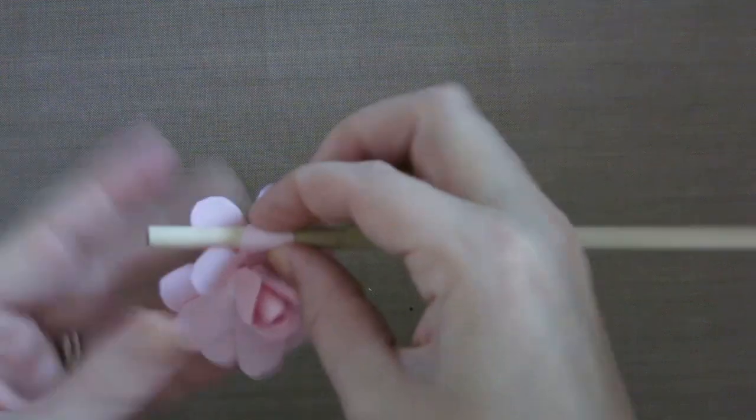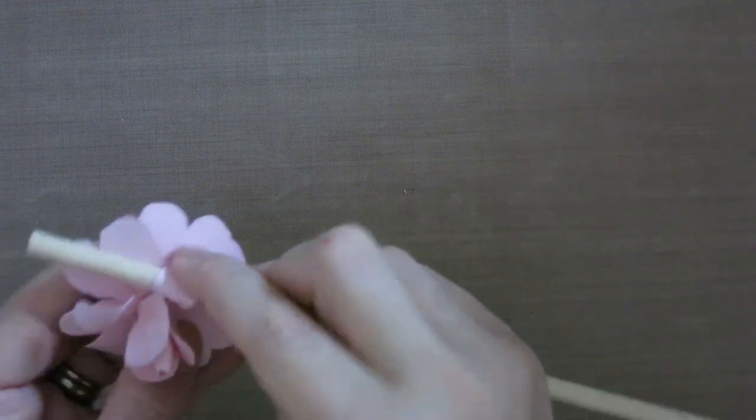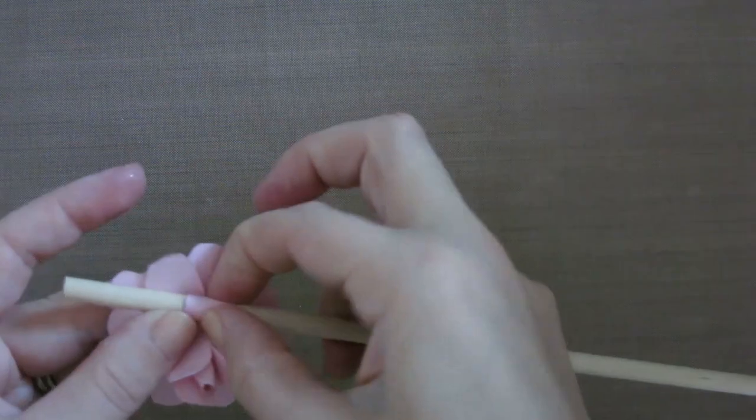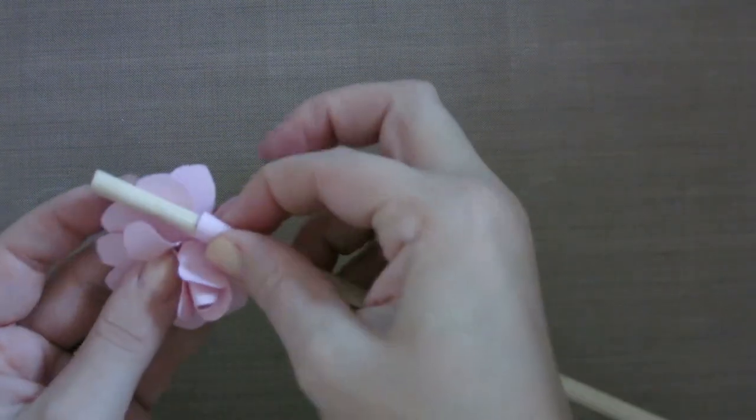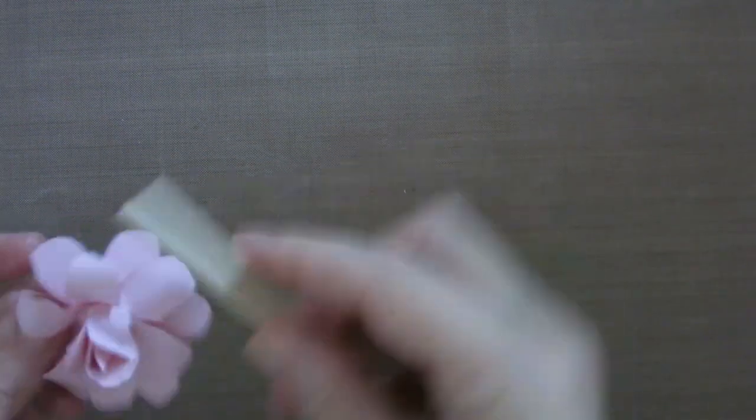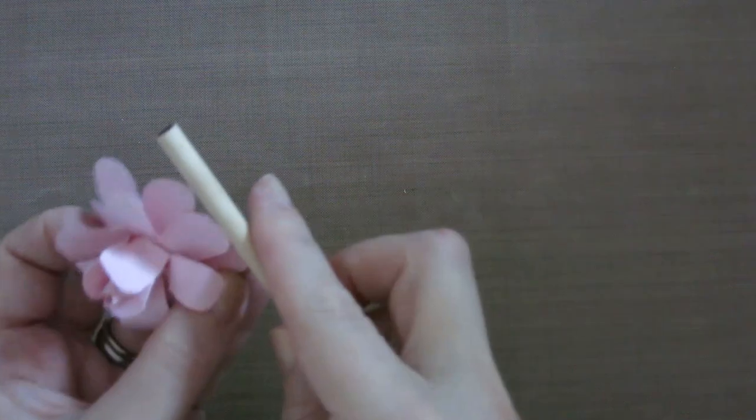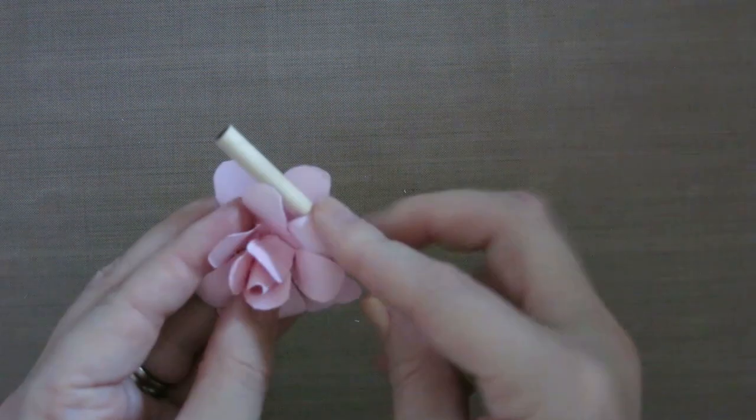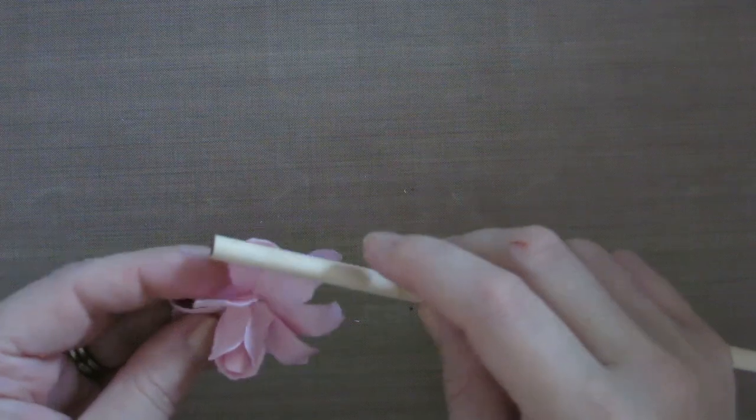So wrapping the next lot of petals around. Now there's nothing wrong with trimming one of the petals off if you find that it doesn't fit properly with the flower. It's completely up to you. This is your rose and you can make it look however you like. That's one of my favorite things about it.